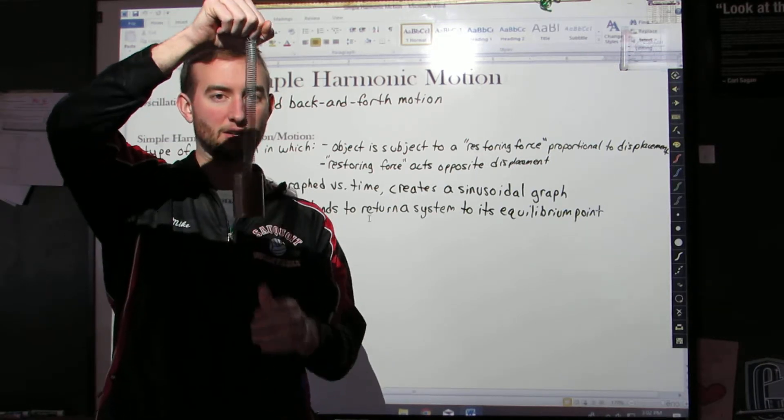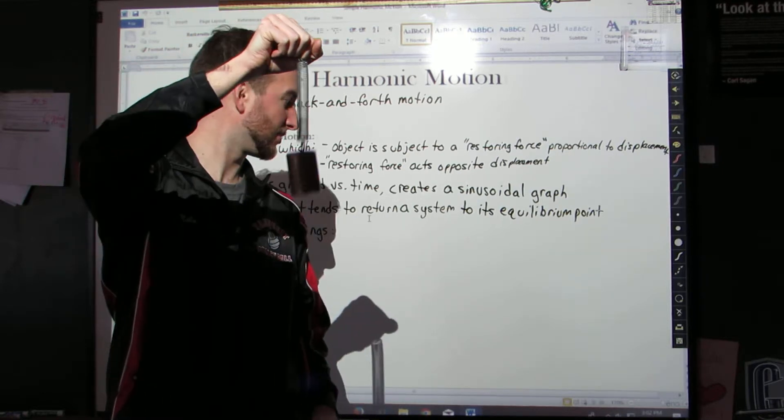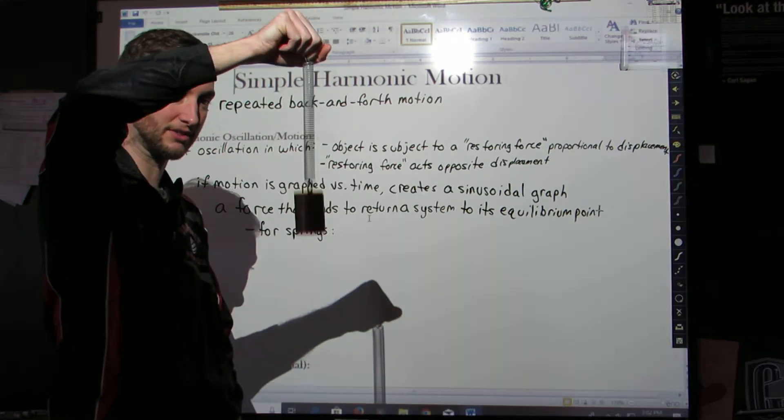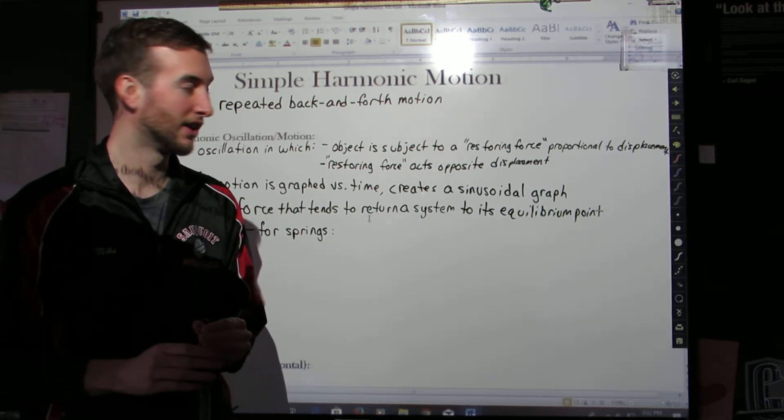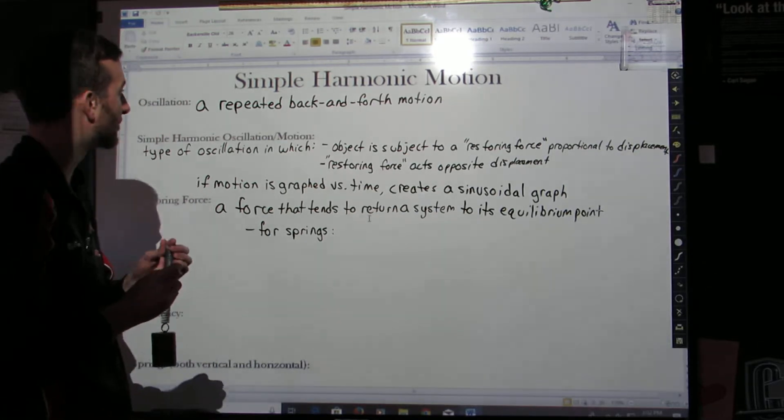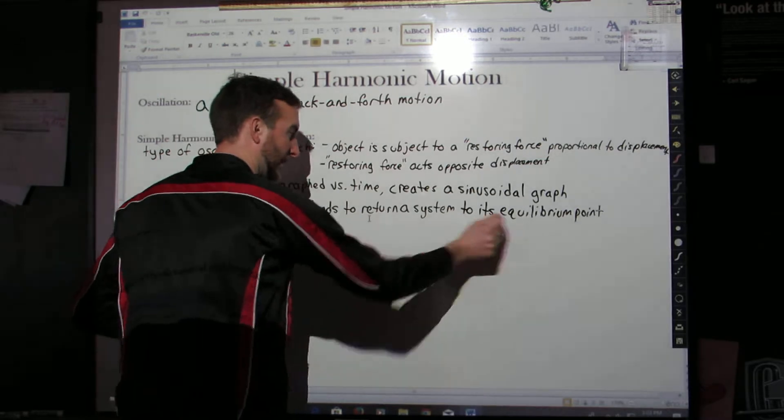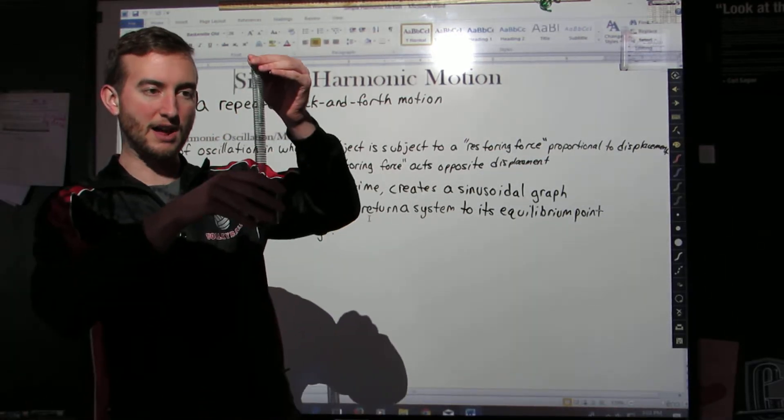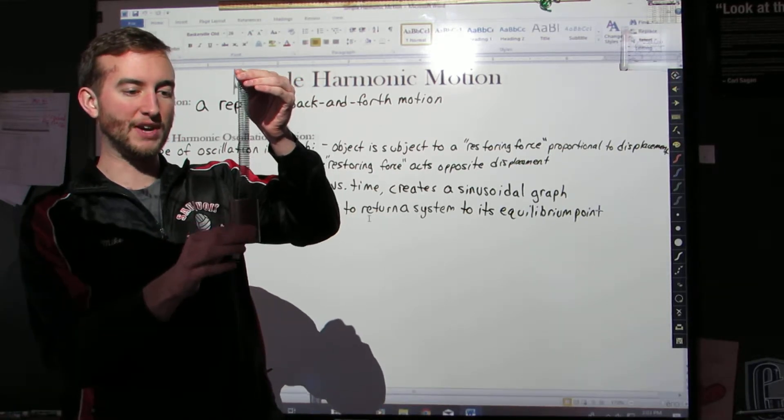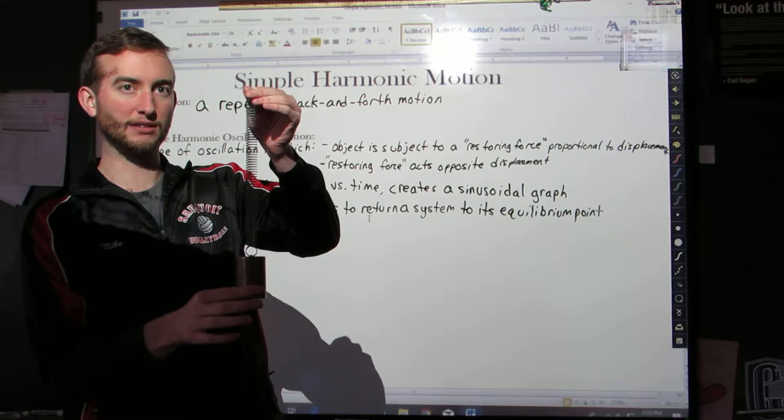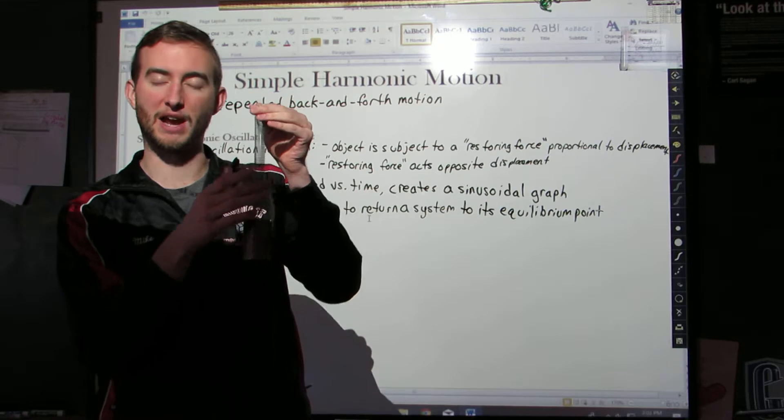This is simple harmonic motion right here. We have a mass that's oscillating on the end of a spring. Hopefully you can see that right there. In this case, the spring is able to provide that restoring force. Let's go to our definition. The object is subject to a restoring force proportional to its displacement. Remember, restoring force tries to bring a system back to equilibrium. Right now, this is equilibrium for this system. This is the equilibrium level. If I pull down, what happens to the force from the spring? It's more. It wants to increase.